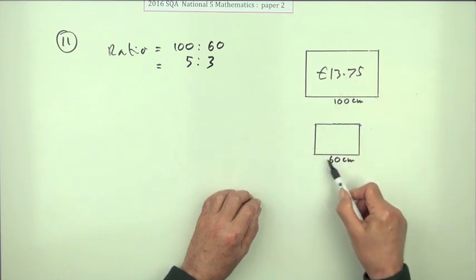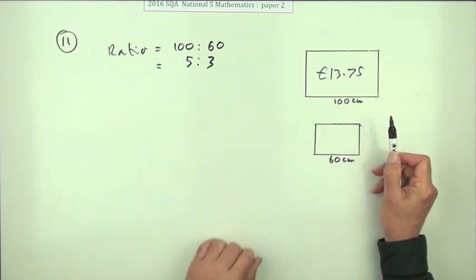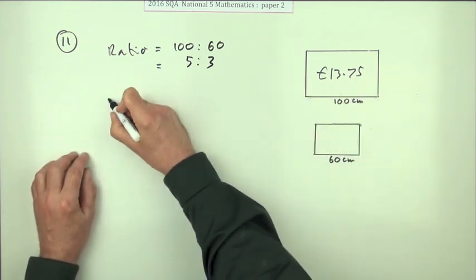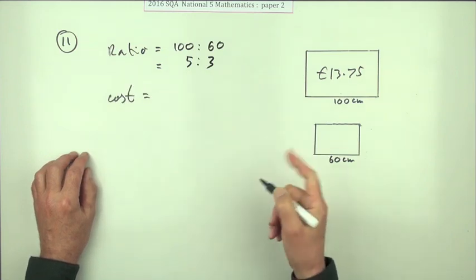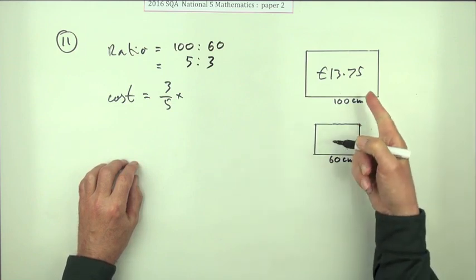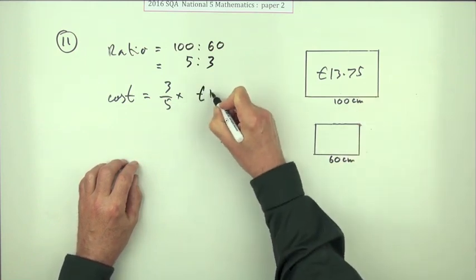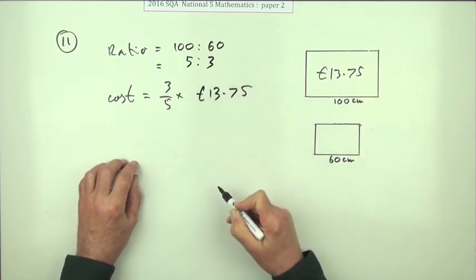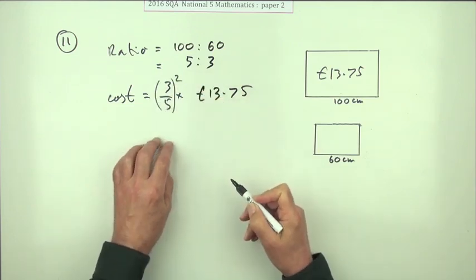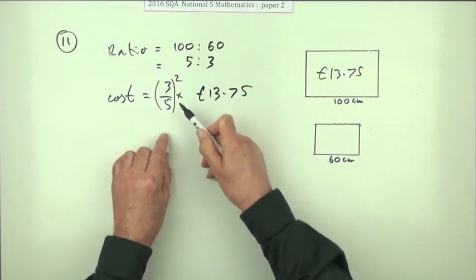However, that's related to the area, so it's really an area question. When you want the cost of this one, yes it's smaller, so it'll be three-fifths of the cost of that one, which is £13.75. But it won't just be three-fifths on its own, it'll be the square of it. An area is two-dimensional, it's three-fifths of both of the lengths.